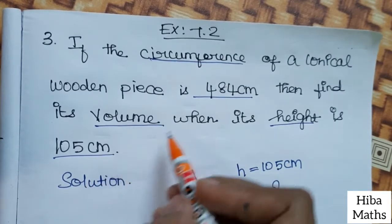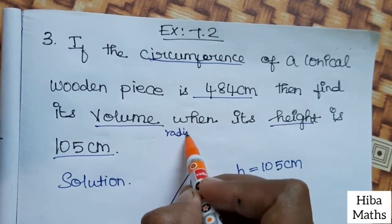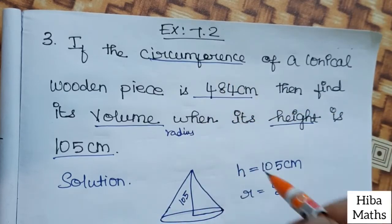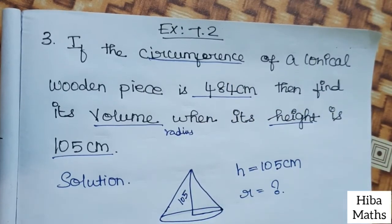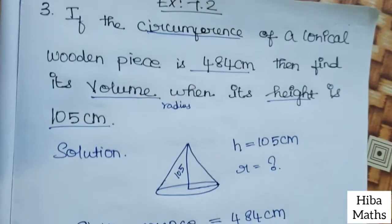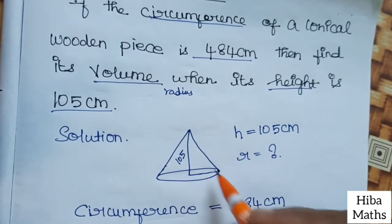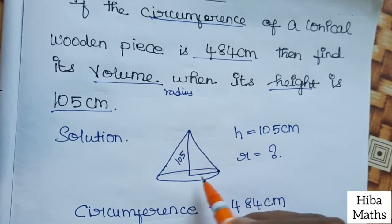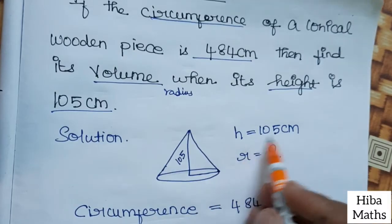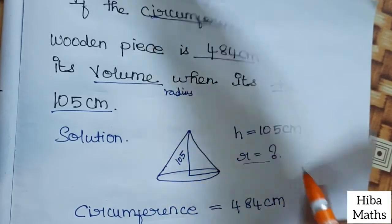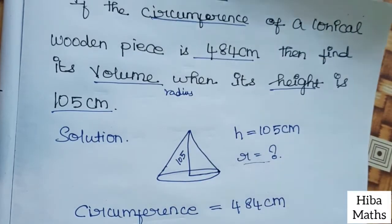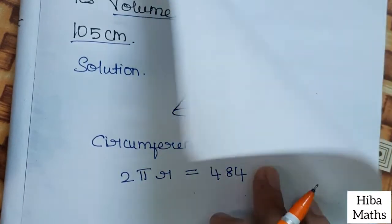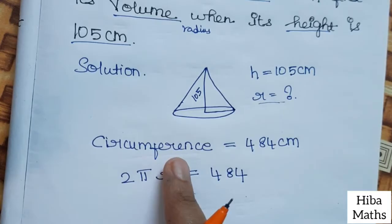Given: the volume of a conical wooden piece — we need to find its radius. We are given the circumference as 484 cm. That's why we substitute the formula and solve it. From the diagram, the height is 105 cm, and we need to find the radius.